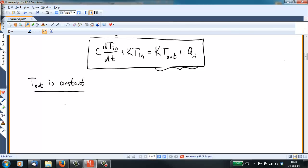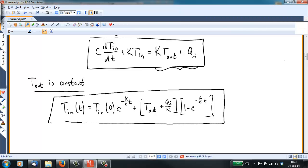If T_out is constant, then the solution to this equation is T_in, as a function of time, is equal to the initial indoor temperature times e to the minus K over C t plus the quantity T_out plus Q_I over K times 1 minus e to the minus K over C t. Wow, that looks like an awful lot of stuff. If you've had ordinary differential equations, then you should be able to derive the solution after, I don't know, about a page of algebra is what I went through.